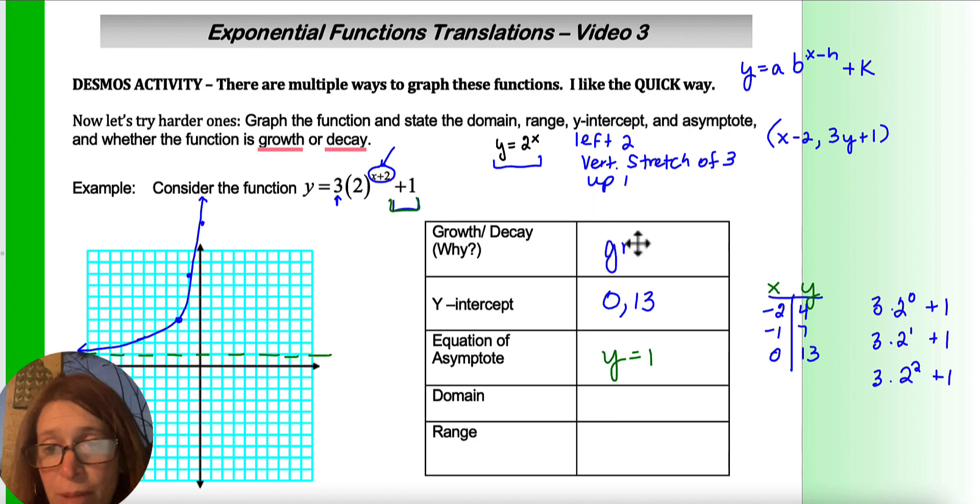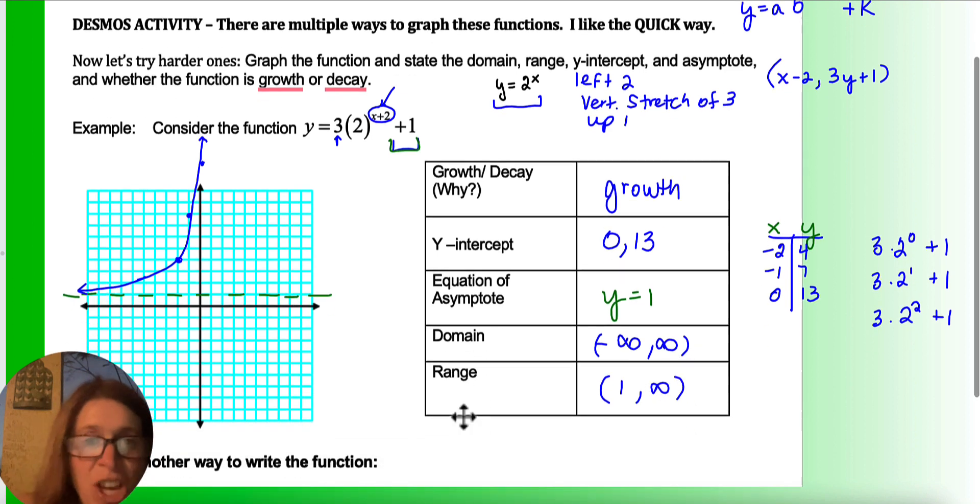3 points is totally enough. I even would accept 2 points. It's still a growth function because b is greater than 1. My domain, again, remember, it doesn't change negative infinity to infinity. But my range now relates to my asymptote. So now the graph isn't going to reach 1. So that would be from 1 to infinity. And remember, range are your y values.